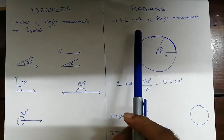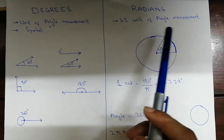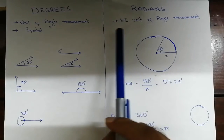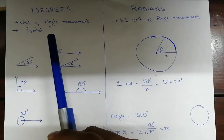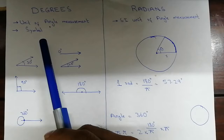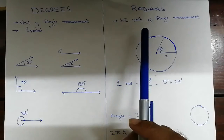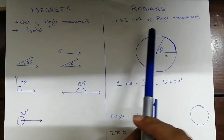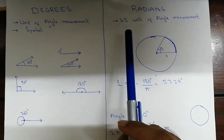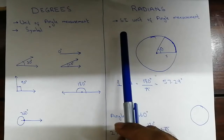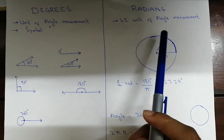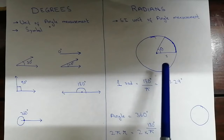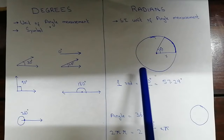Now we come to radians. Radian is also a unit of angle measurement, but it is the SI unit. Remember, degree is not the SI unit of angle measurement — radian is. This commonly appears in MCQs asking what the SI unit of angle measurement is.